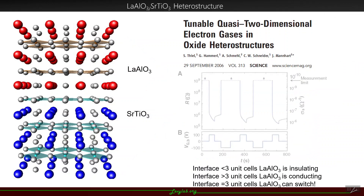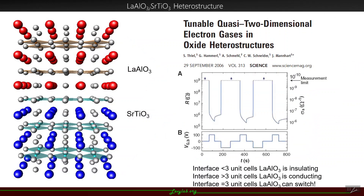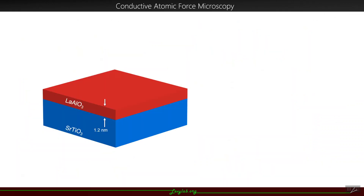When we remain at this critical thickness of three unit cells, you can reversibly switch the conductivity of the interface between insulating and conducting, by, for example, applying a backgate to the bottom of the sample and changing the polarity of the voltage applied. In our group, we have developed a method to locally tune this metal-insulator transition using conductive atomic force microscopy lithography, or CAFM lithography.